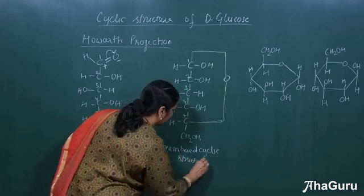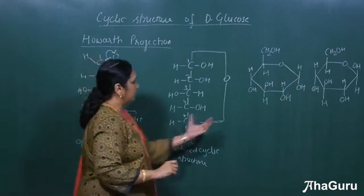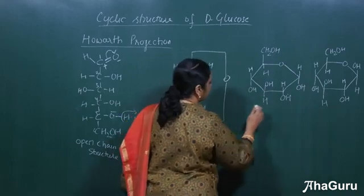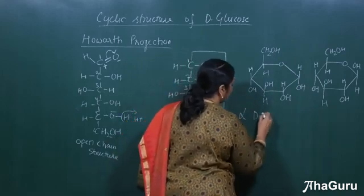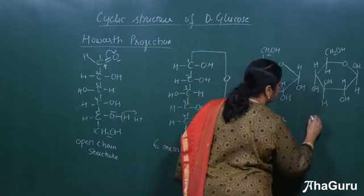It's very easy to write. Just remember this way. Now this also can be written in the other proper cyclic manner. So I've written two different ways. This is called alpha D-glucose and this is called beta D-glucose.